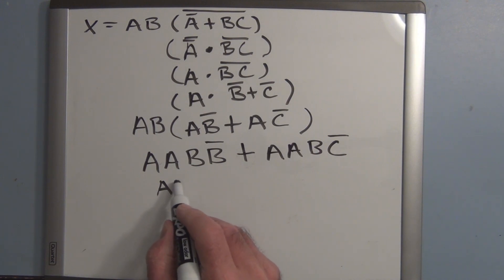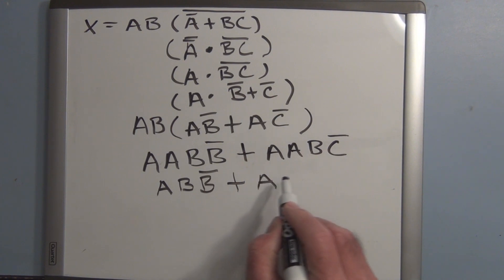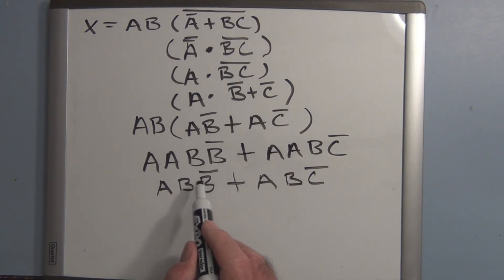And this is B, B not or together with A, B and C not. Now we have this term here, B and B not.